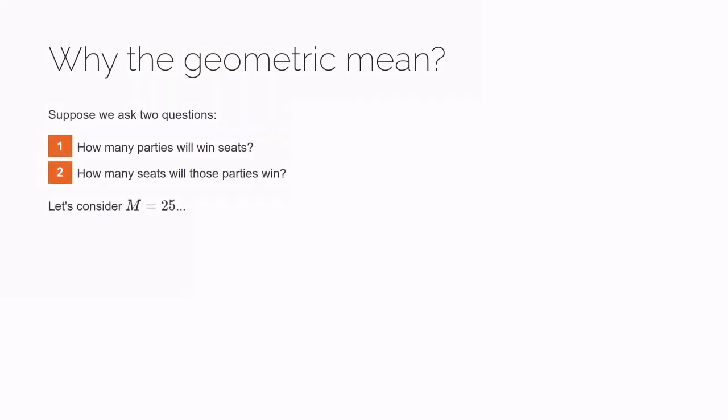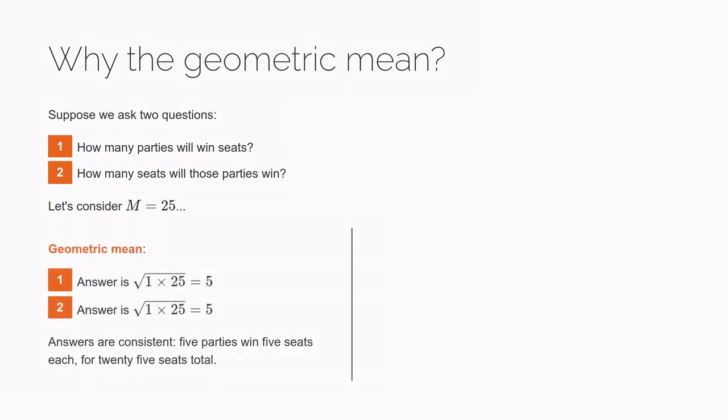Suppose we didn't just ask how many parties will win seats, but went on to also ask how many seats will those parties win? If we've got a district magnitude of 25, then the answers to those two questions look like this. For the geometric mean, for the number of seat winning parties, our reasoning is just what it was before. For the number of seats won by those parties, well, we know the lower bound is one and the upper bound is 25, and so we get the same number. These two answers are consistent because five seat winning parties, each winning five seats, adds up to 25 seats, which is our district magnitude.